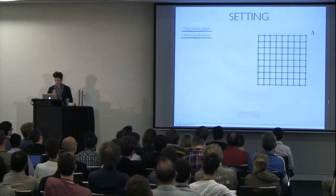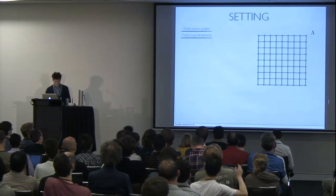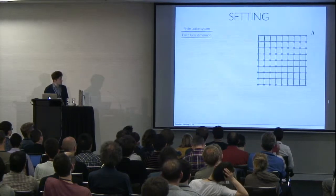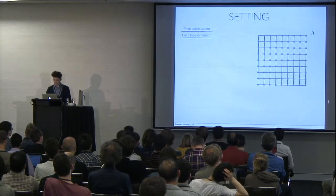So, here's the setting. We consider a lattice, a finite lattice for convenience. We assume that the local dimension is finite. And I draw a square lattice, but of course these results hold for more general lattices.